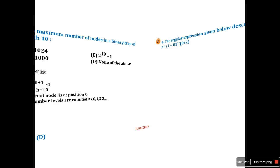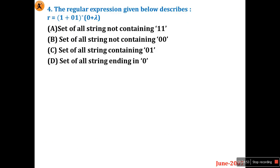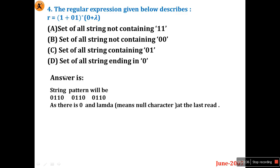Question four: the regular expression a(1 + 01)*(0 + λ) — what does it describe? The Kleene star means it may generate null or any number of strings. It may print either 1 or 01, or null, or repeat n times. The final part (0 + λ) means it executes either 0 or lambda.